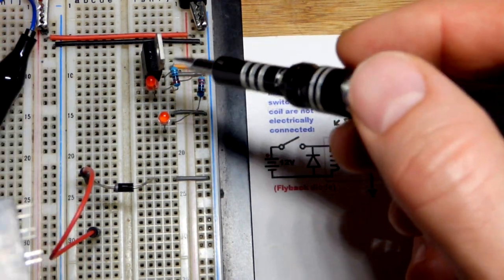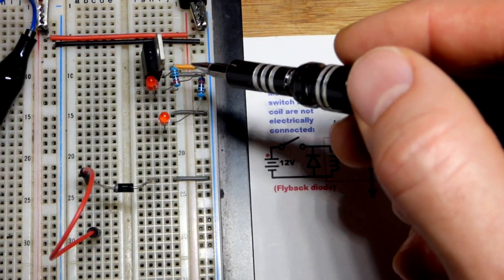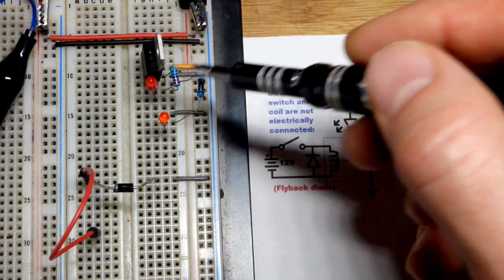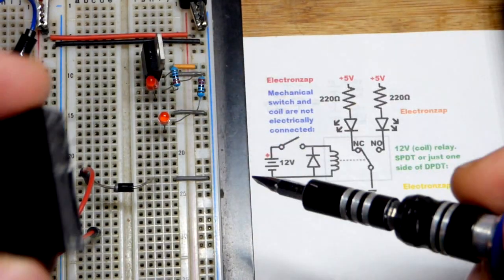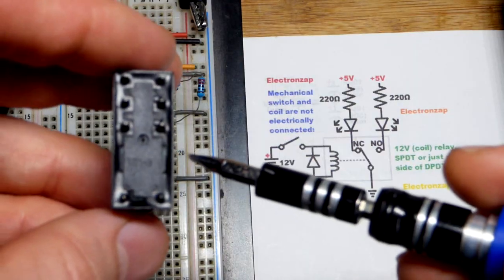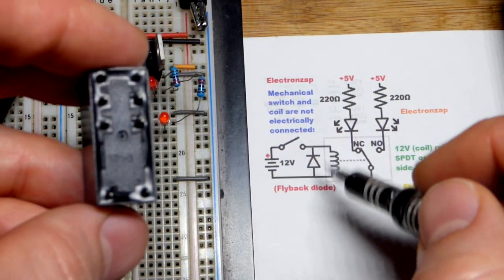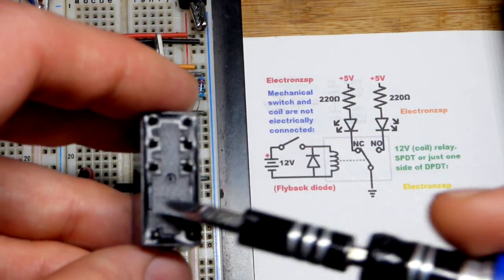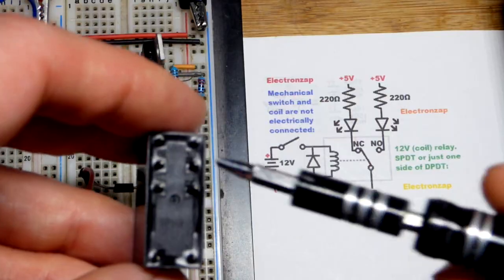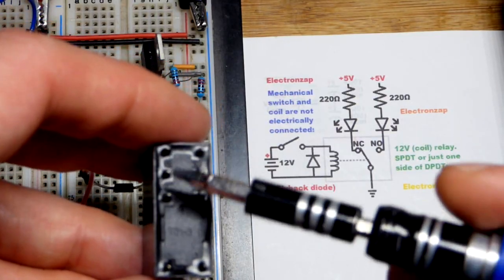Usually there's some capacitors on both between the positive and ground and also between ground and the output, but I didn't add them there. You don't usually need them. So we got the relay there. This is where the coil is down there across those two points. And then up here, no wires or anything goes across. It's all magnetic. Up here, we have the mechanical switch part right there.